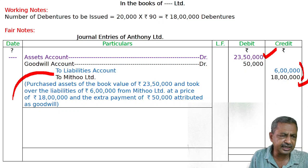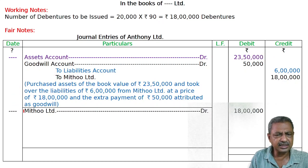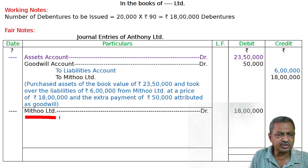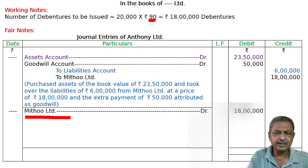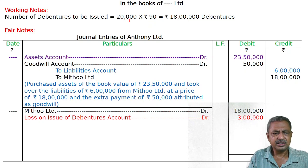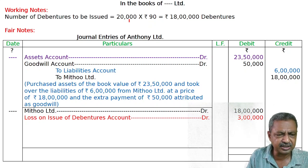Mithu Limited account is credited with 18,00,000. Here is the loss on issue of debentures: the discount was 10% which is 2,00,000, and the premium on redemption was 5% which is 1,00,000. So total loss on issue of debentures is 15% — 3,00,000.